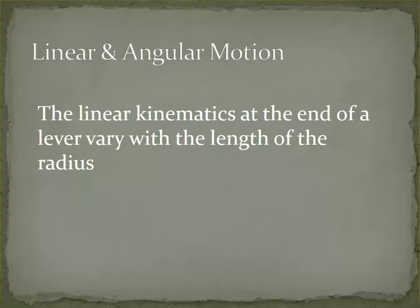All right, so now that we've done linear and angular kinematics, let's look at linear and angular kinematic relationships. It basically is the fact that the linear kinematics at the end of a lever, so at the end of your arm, your leg, tennis racket, golf club, vary with the length of that lever or that radius.